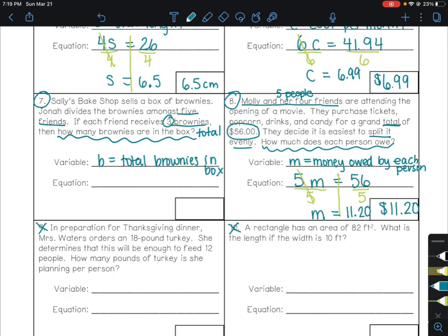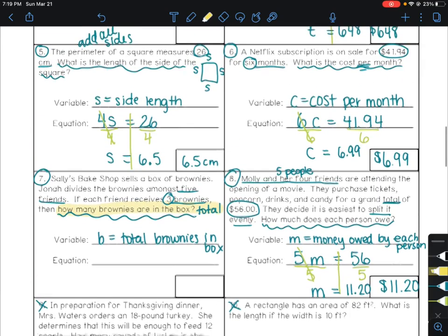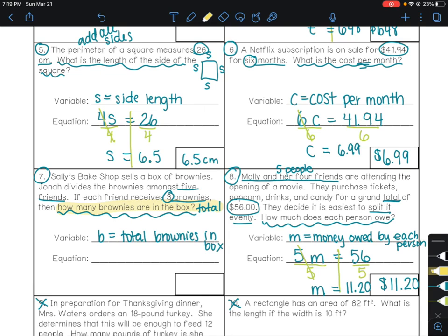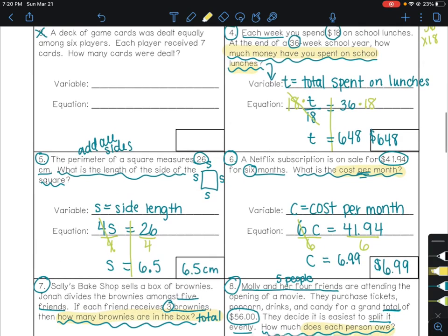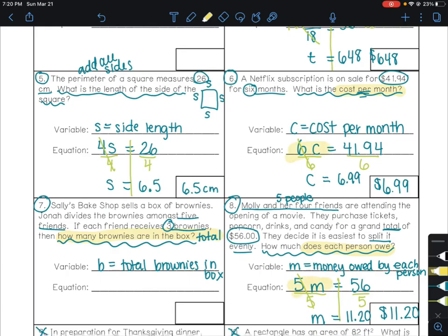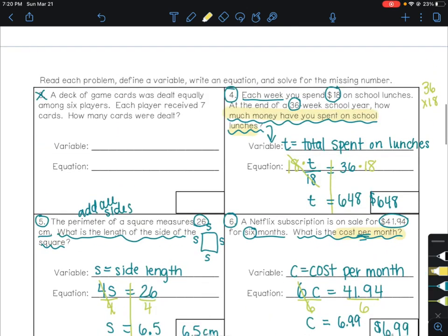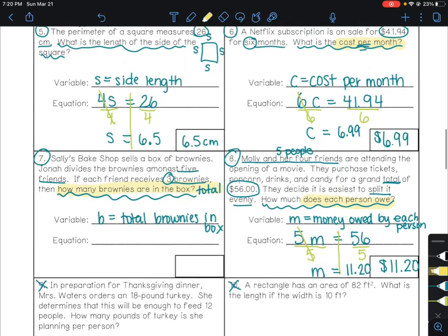Before we keep going, there are really two types of multiplication and division word problems. There are problems where our equation is looking for a total like this one. And then there are problems where our equation is looking for what each person or each thing or per month, per day, looking for just one of something. So for example, in six and in eight, we're looking for just one month, just one person. Then if we go back to number four, that one was looking for a total again. We had the two pieces and we needed to turn them into a total. So notice in six and eight, our equation had multiplication and we used division to solve it. But in number four, we had division in our equation and then used multiplication to solve it. So in number seven, because we're looking for a total, we're going to have a division equation that we solve by multiplying.